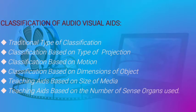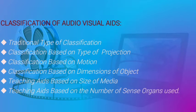Let us proceed to the classification of audio-visual aids. There is the traditional type of classification, classification based on type of projection, classification based on motion, classification based on dimensions of object, teaching aids based on size of media, and teaching aids based on the number of sense organs used.